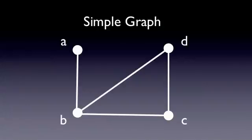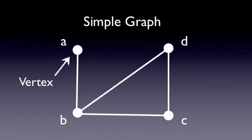The first type of graph we'll look at is called a simple graph. Here we have several dots that are connected to each other by a few lines. In graph theory, each of these dots is properly referred to as a vertex or sometimes a node, and each of the lines is referred to as an edge.